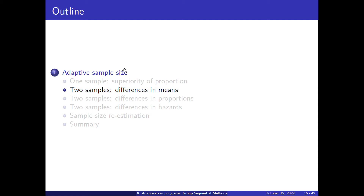So now we will use this adaptive sampling size, dividing the experiment into small pieces and taking decisions after each one of these pieces, when we are comparing differences in means, proportions, or hazards in two samples.